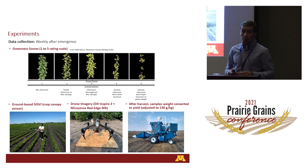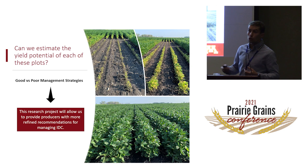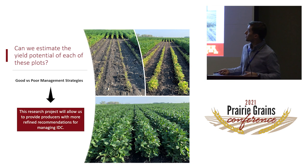After emergence, plots were evaluated weekly for IDC severity using a 1-to-5 visual rating system, which we call green scores, as well as ground-based NDVI using equipment called the Crop Circle run in the field, and also high-resolution drone imagery. After harvest, the weight of each sample was converted to yield on a 13 percent moisture basis.